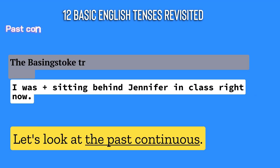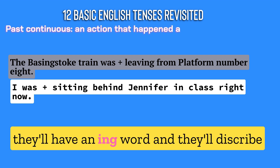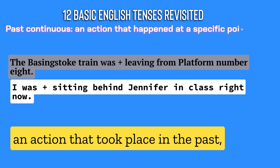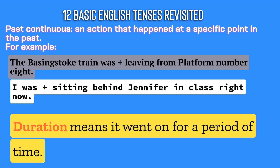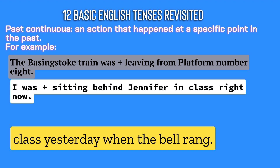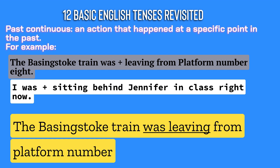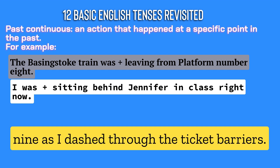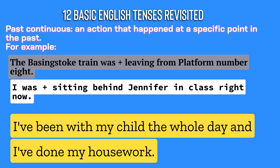Let's look at the past continuous tense. Past continuous tenses will have two parts — they'll have an '-ing' word, and they'll describe an action that took place in the past, showing that there was some kind of duration, meaning it went on for a period of time. 'I was sitting behind Jennifer in class yesterday when the bell rang.' 'The business truck train was leaving from platform number 9 as I dashed through the ticket barriers.'